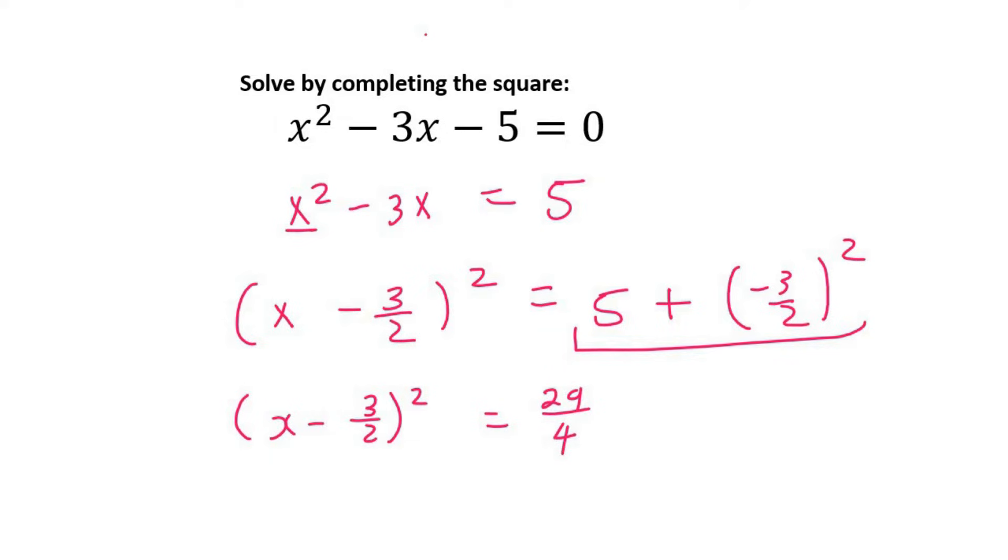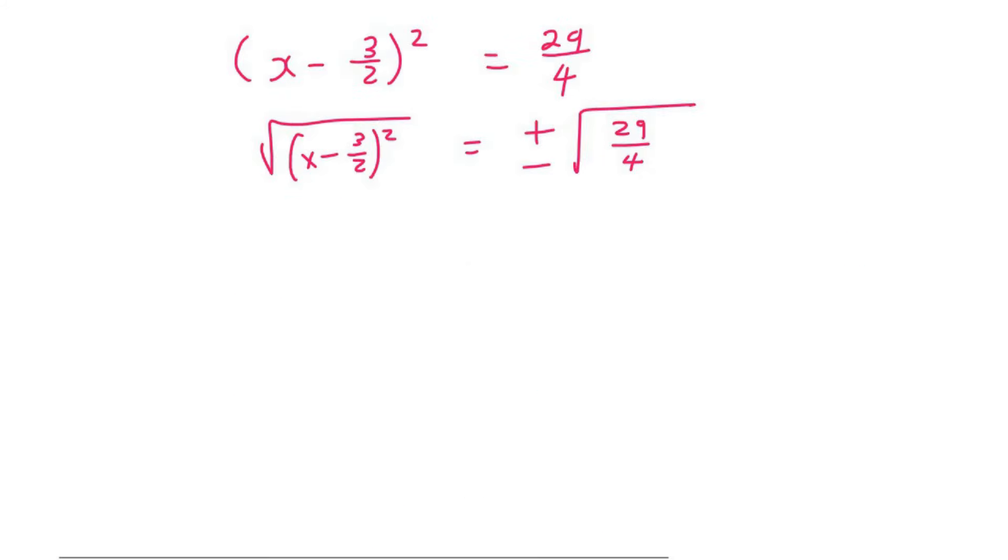And then what I do is I take a square root on both sides because I know that a square root will help me to get rid of the square. Then on the right hand side, I must say plus minus like that. And so on the left hand side, the square root is going to be gone. So we're only going to be left with x minus 3 over 2.